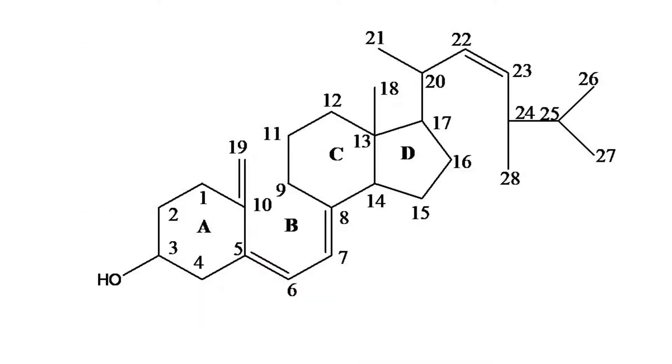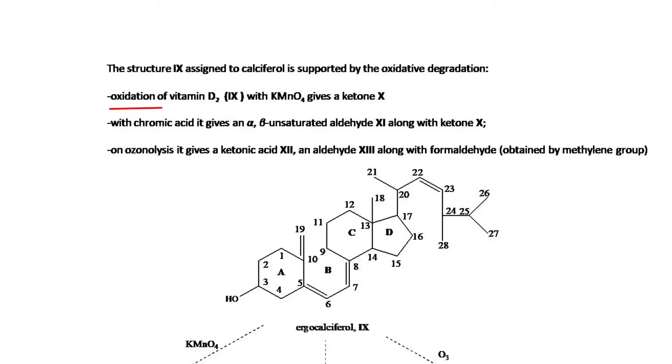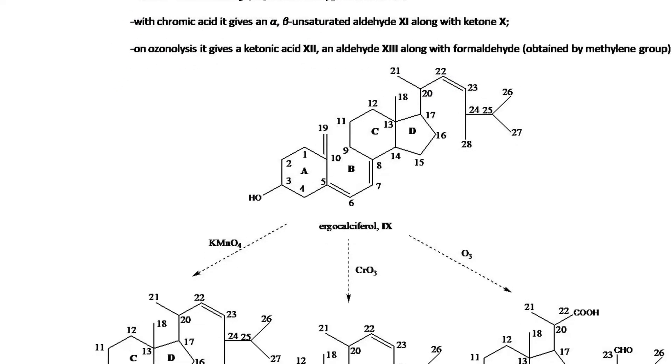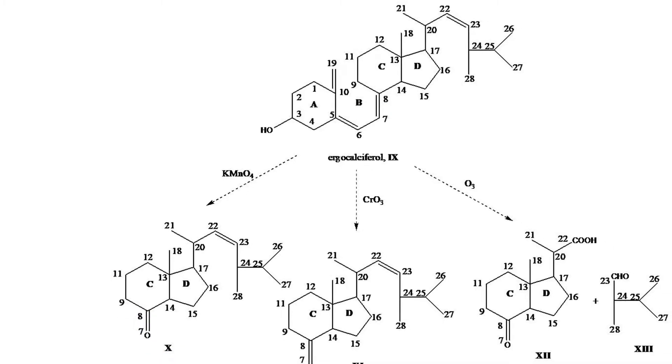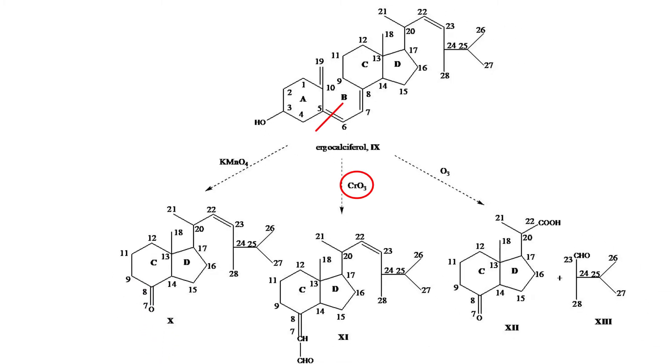All these evidences in combination give the structure of vitamin D2 (ninth). Oxidation of vitamin D2 with KMnO4 gives a ketone (tenth). With chromic acid it gives an alpha-beta unsaturated aldehyde (11) along with ketone (10). Ozonolysis gives a ketonic acid (12) and aldehyde (13) along with formaldehyde obtained from the methylene group.